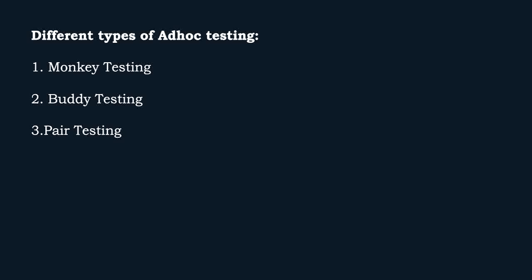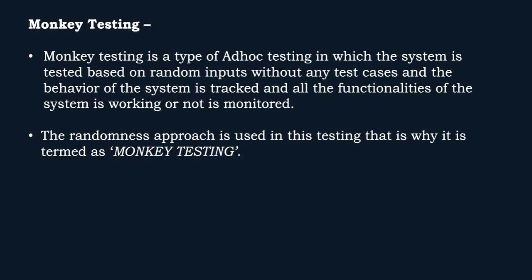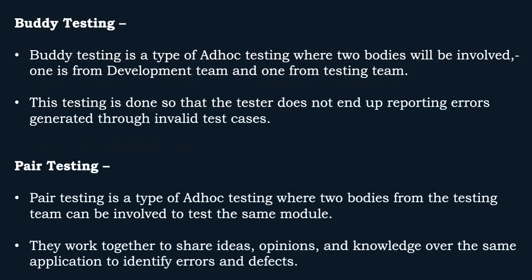We have three different types of ad hoc testing: monkey testing, buddy testing, and pair testing. Monkey testing is a type of ad hoc testing in which the system is tested based on random inputs without any test cases, and the behavior of the system is tracked to check if all functionalities are working. By putting some random values, that's when we test it — which is majorly known as monkey testing. The randomness approach is used in this testing, that is why it is termed as monkey testing.